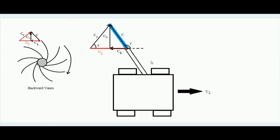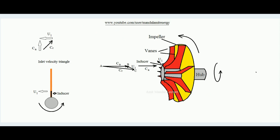To summarize: u2 is the tangential velocity of the moving part, and ch is the tangential component of fluid velocity — for backward vanes, ch is opposite to u2 so we subtract; for forward vanes we add. For the inlet, the inducer tip is always radial, so for all three types of impeller vanes, the inlet velocity triangle remains the same. Thanks.